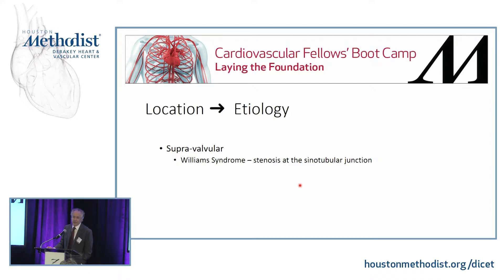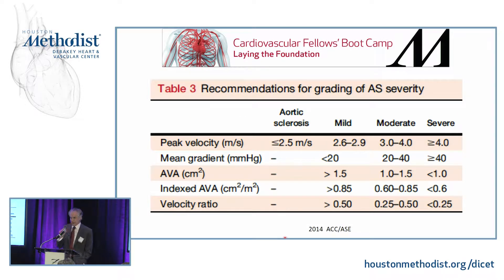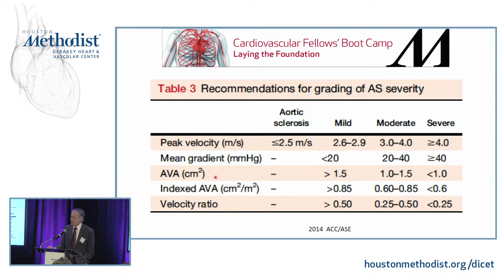Supravalvular stenoses are really quite rare. The only one worth noting is Williams Syndrome, which is a stenosis at the sinotubular junction. These are the criteria we use to diagnose and grade aortic stenosis: the most common being a peak velocity of four meters per second, a mean gradient of 40 millimeters of mercury, and an indexed aortic valve area of 0.6 centimeters squared per meter squared. Depending on which measurement you rely on, these will be more or less affected by transvalvular flow and ejection fraction.